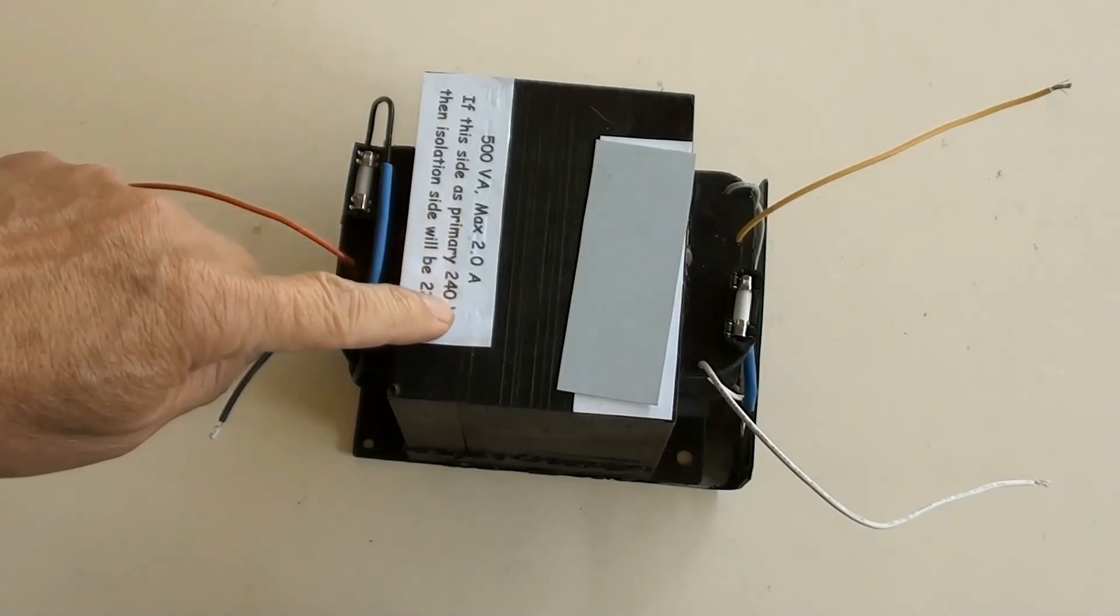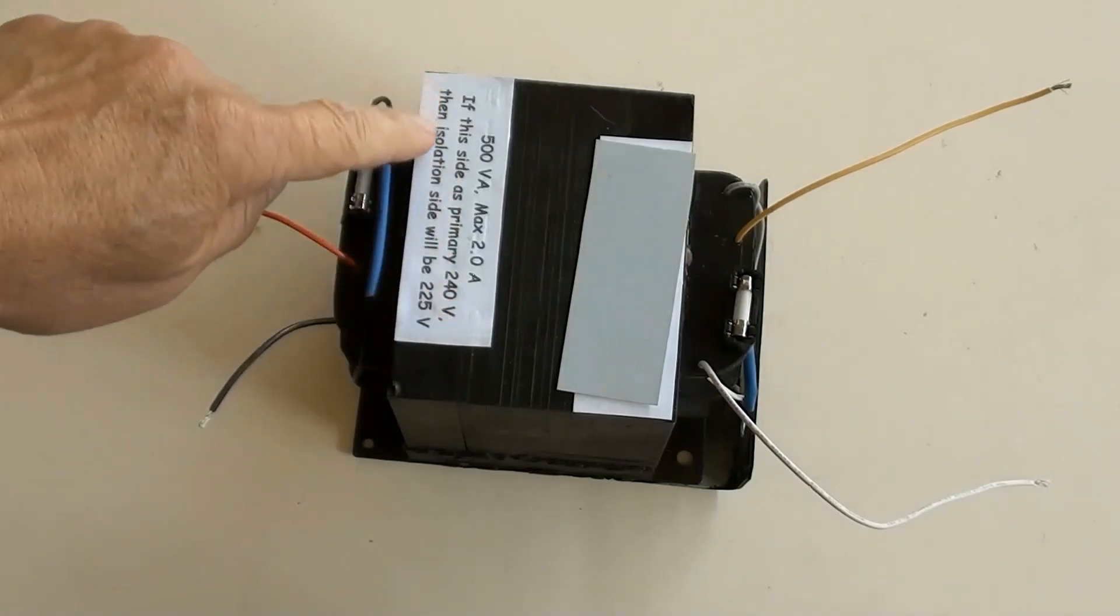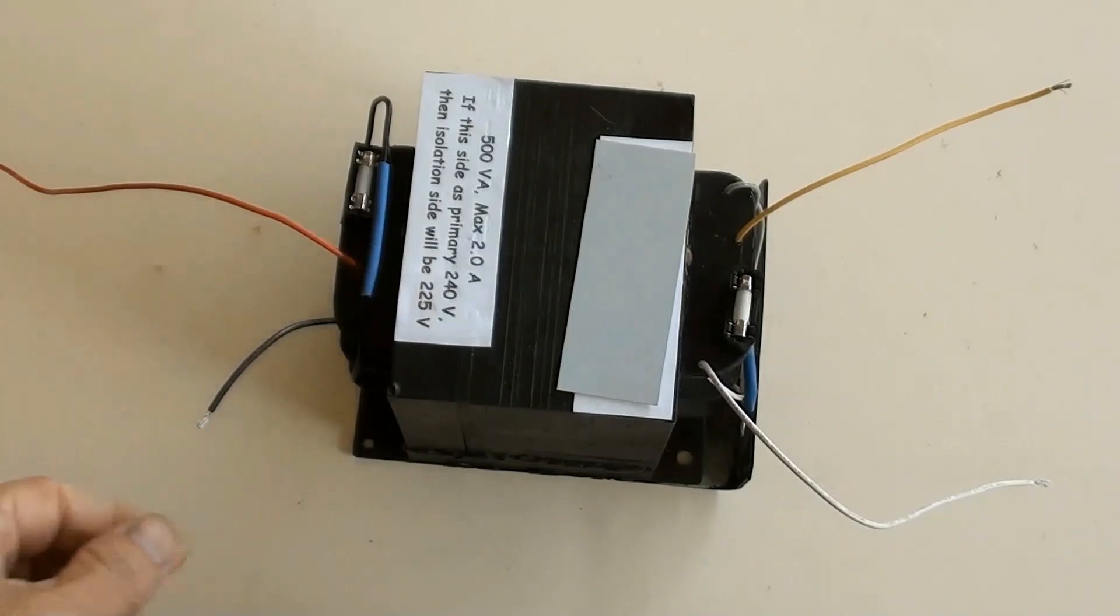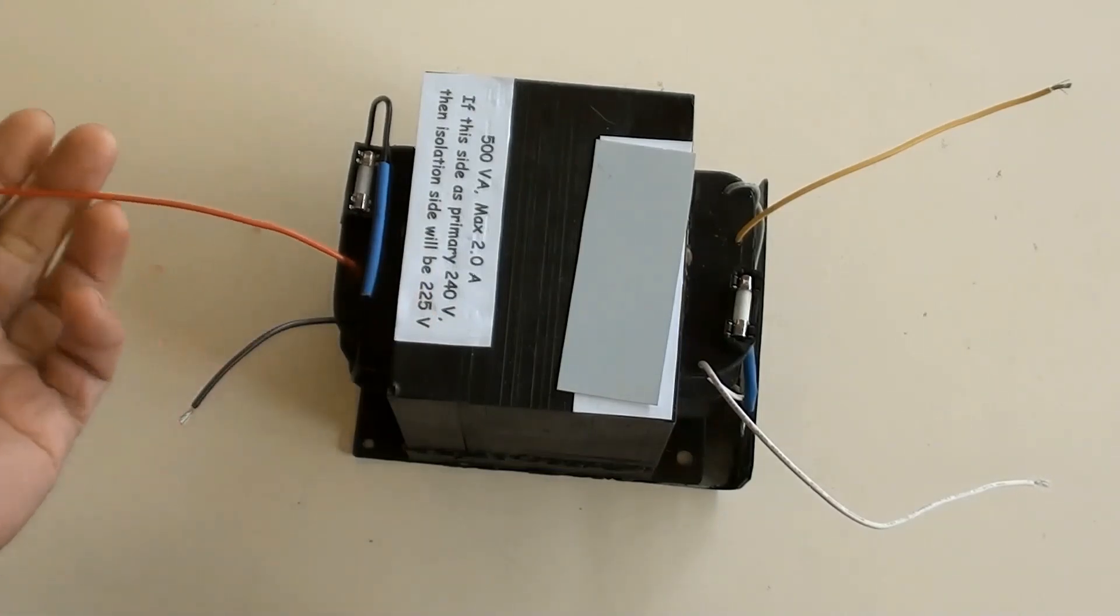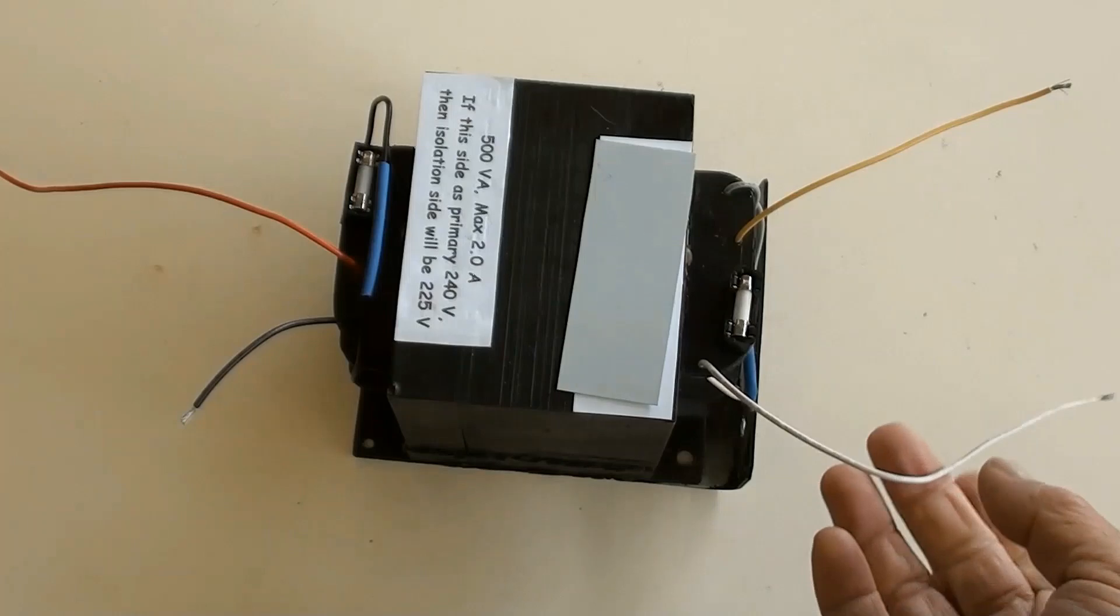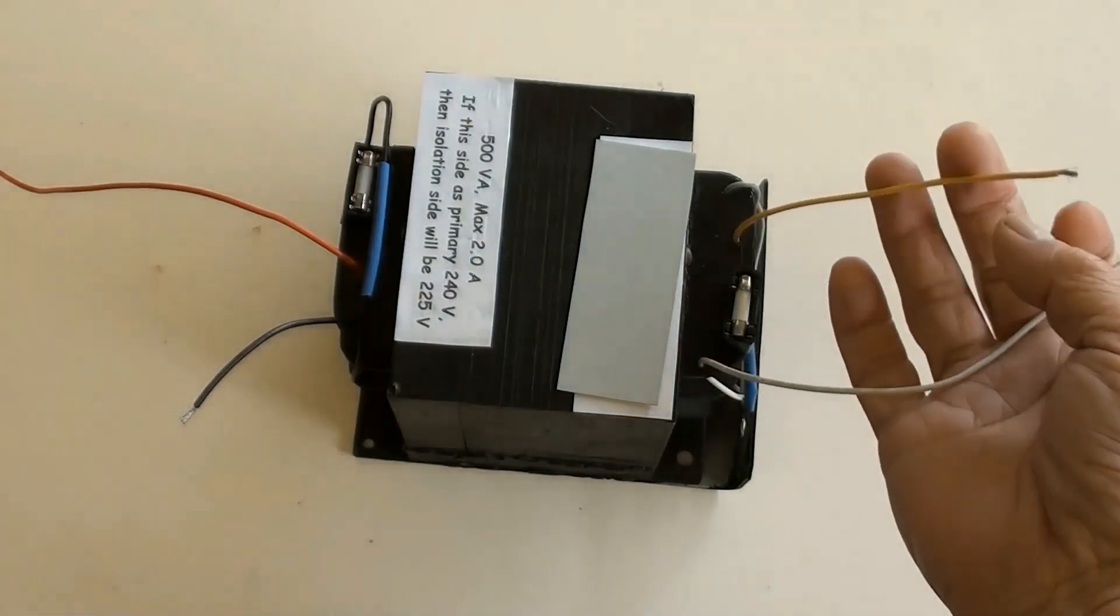This sticker emphasizes the capacity of this transformer. And also, as mentioned earlier, this side used as primary of 240 volts. Then the isolation side would be 225 volts or so.